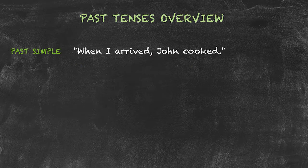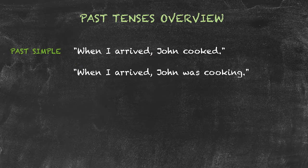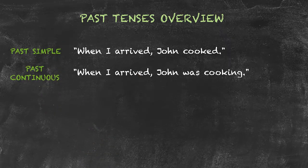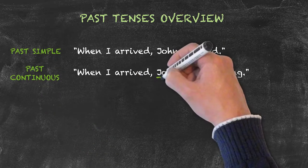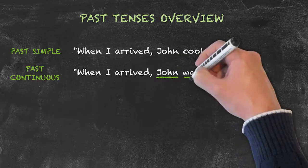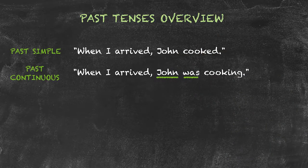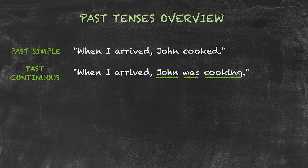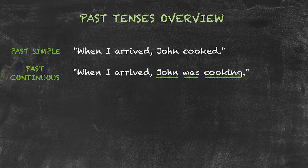The second example sentence: when I arrived, John was cooking. John was cooking is in the past continuous tense. Here the structure is subject — John — the verb to be in the past tense, which is was or were, plus the verb with an -ing at the end.